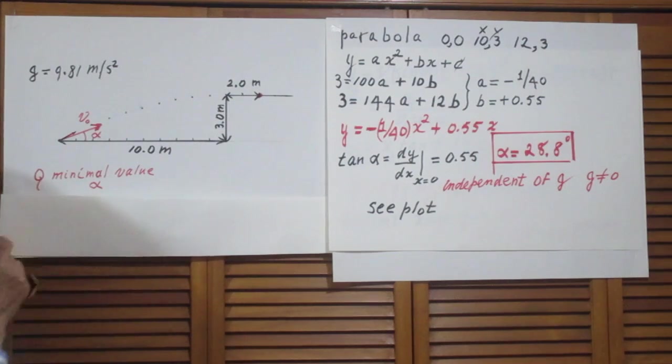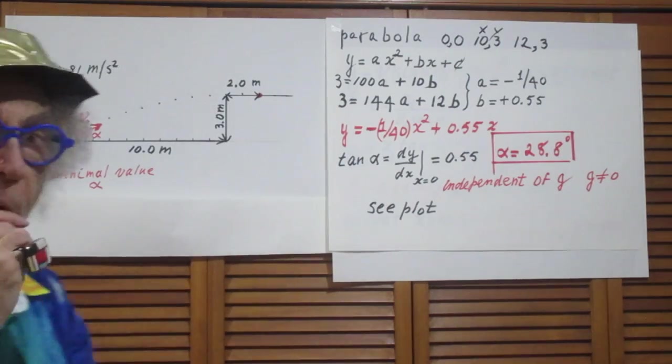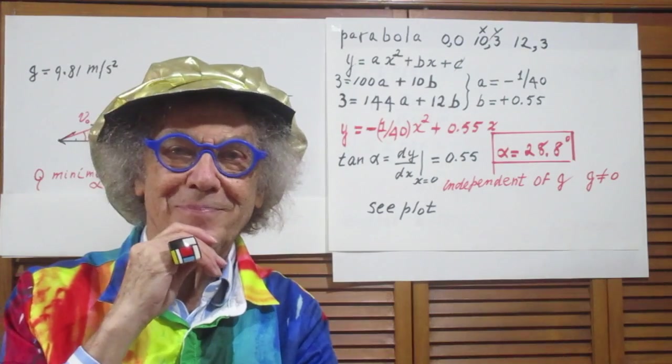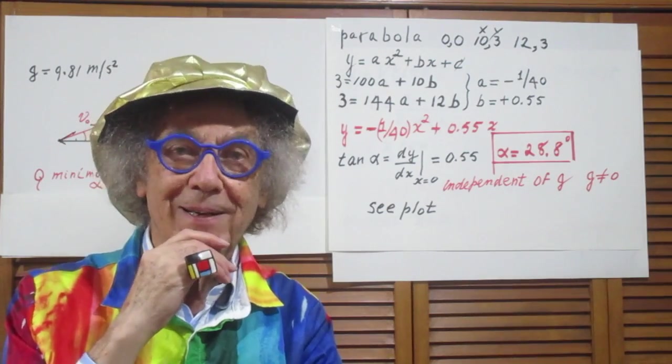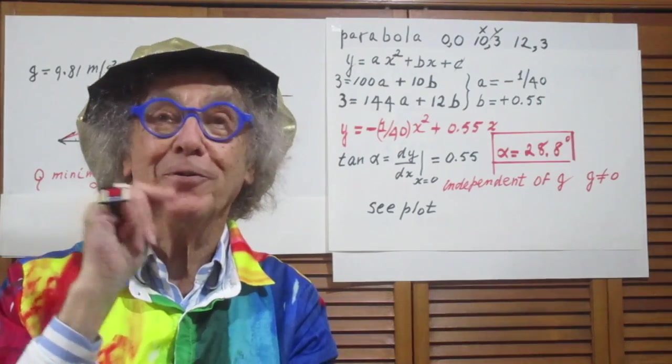So the question is, what is the minimum value of alpha? And we were all going to use 9.81 meters per second squared. Little did you know that the answer of the minimum value of alpha is independent of g. We'll get to that.